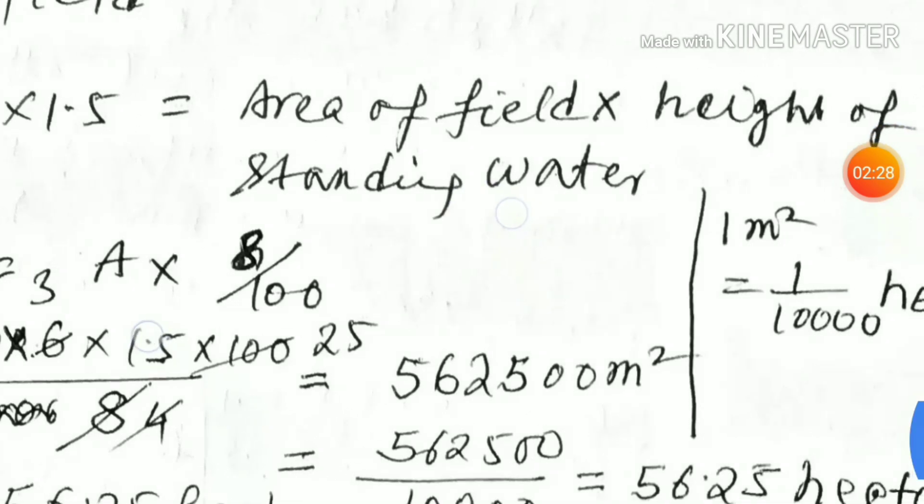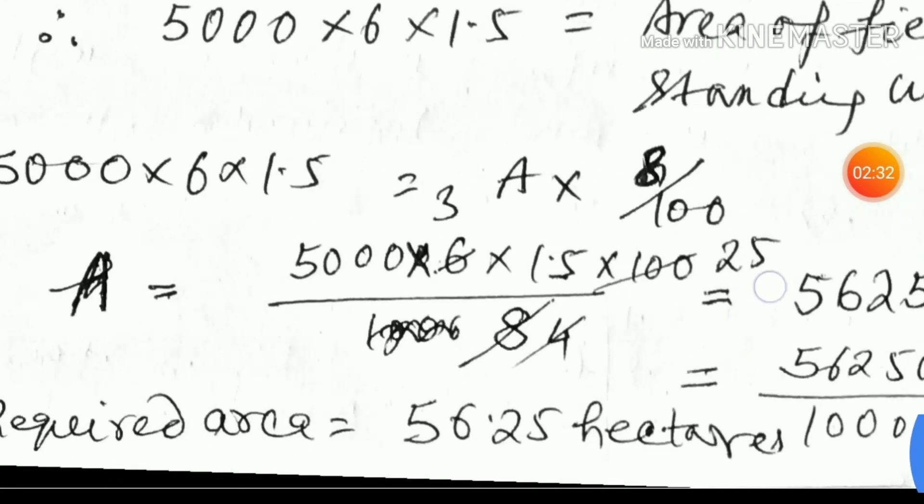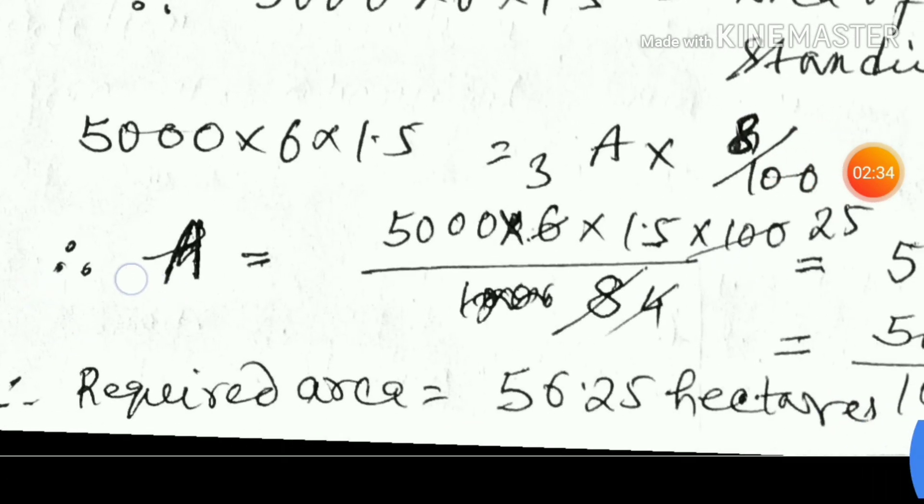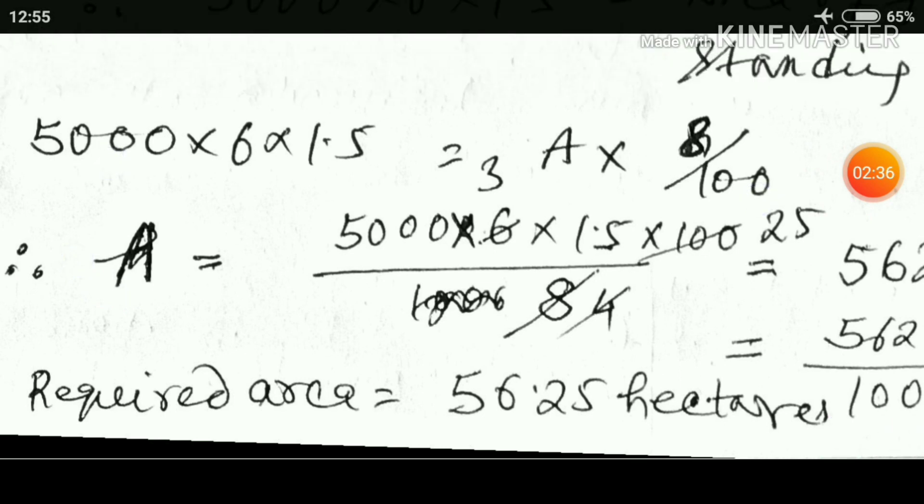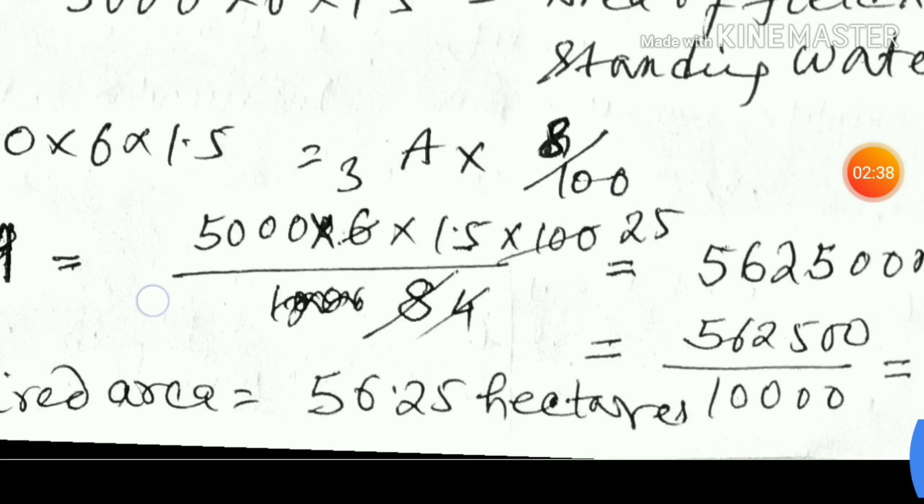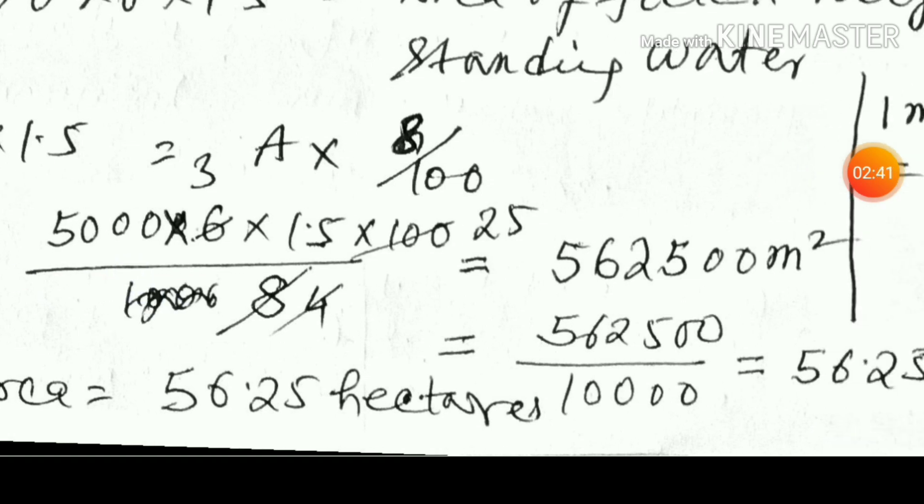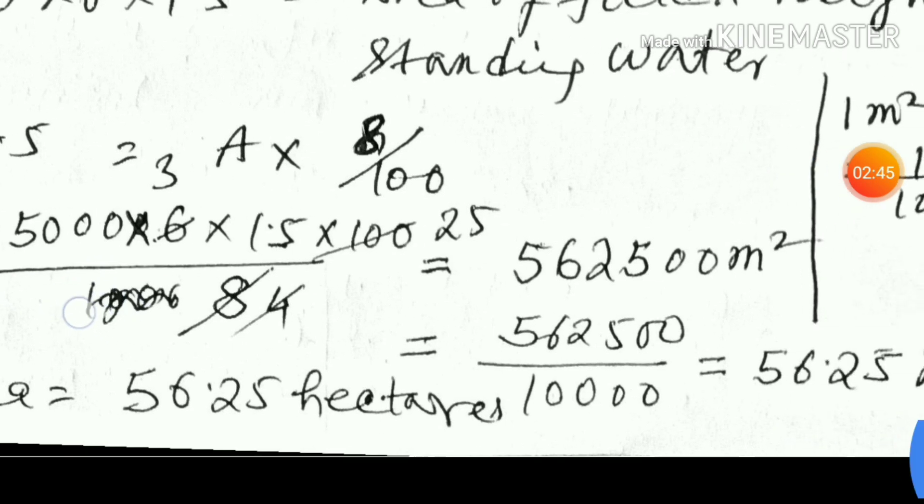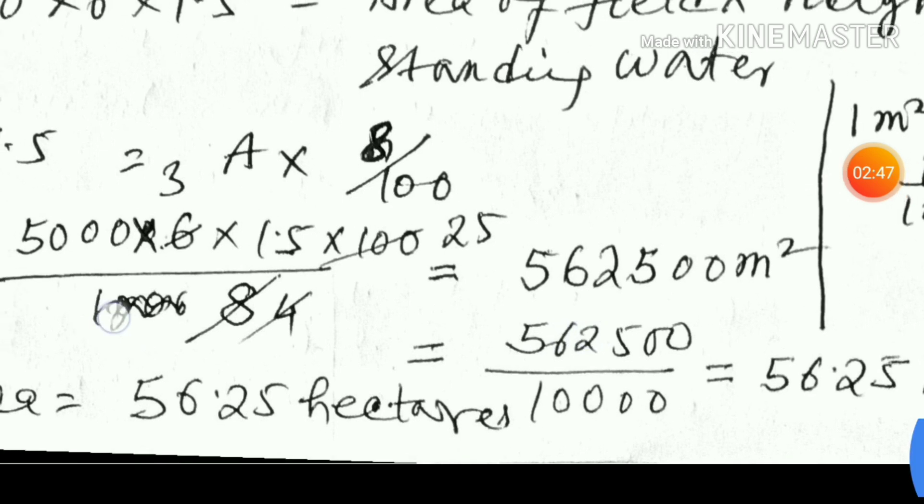Then we will solve area. So, 5000 x 6 x 1.5 x 100 upon 8. This is just overwriting.